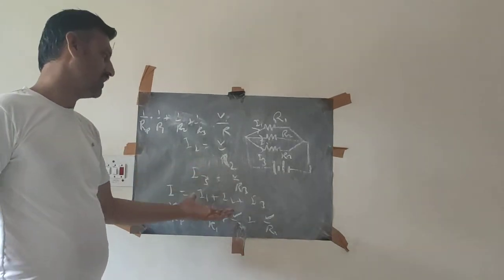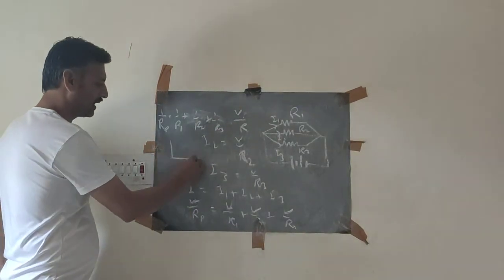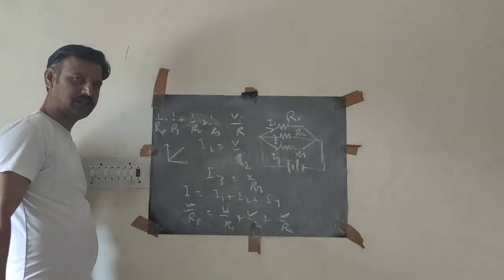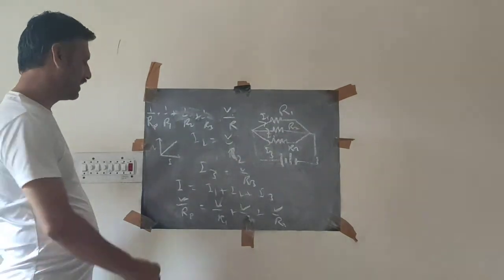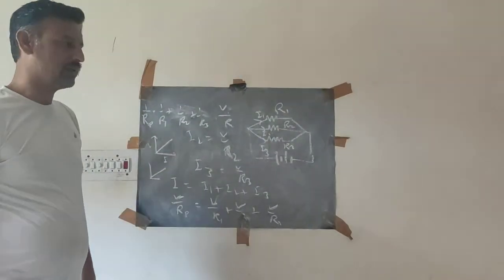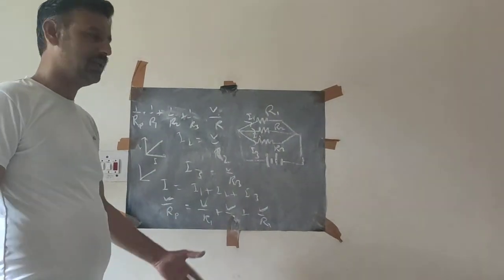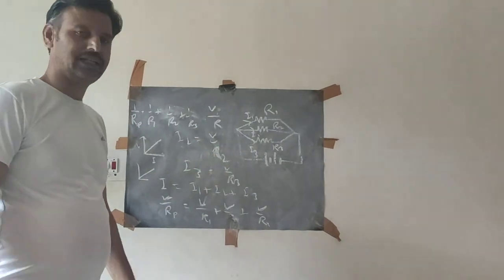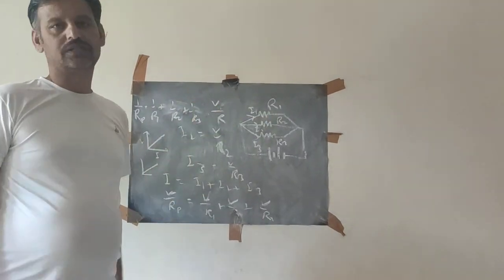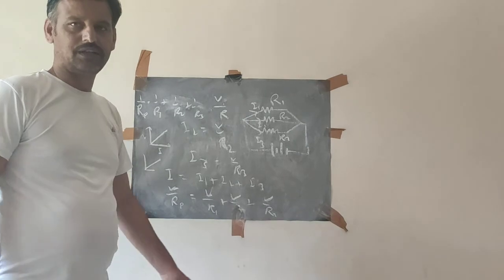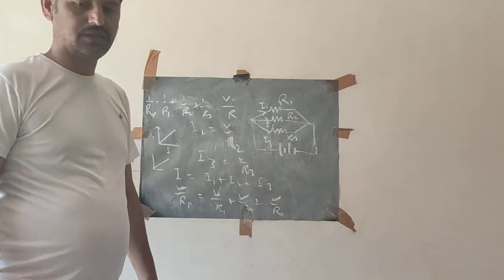We will have numerical problems based on this and on Ohm's law. There are also ohmic and non-ohmic conductors — ohmic conductors make a straight-line current-voltage graph. The important new topic in this chapter is drift velocity and its relation to current. We will discuss more in the next lecture.